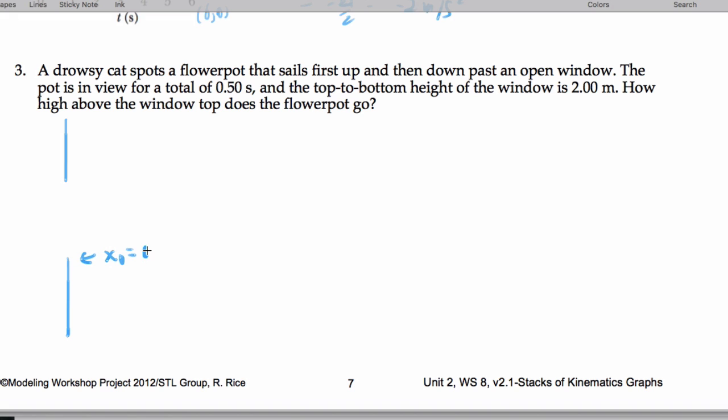So I know that the initial height is 0, the final height of the window is 2. I'm not even going to worry about how high above the top of the window the flower pot goes. Let me just solve for the window region of the problem. So my final speed is unknown, my initial speed is also unknown. It's not 0 because this flower pot has some speed as it sails past.